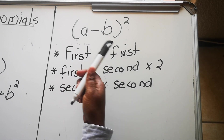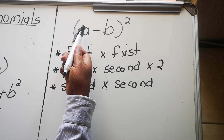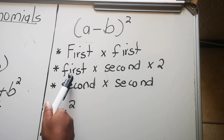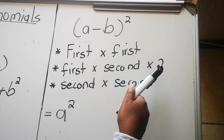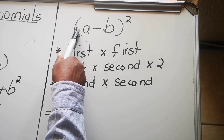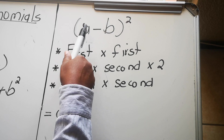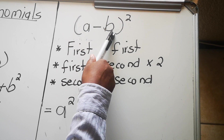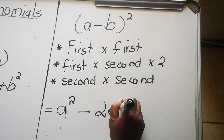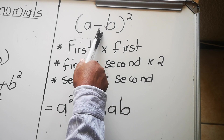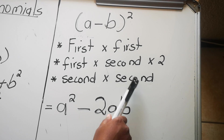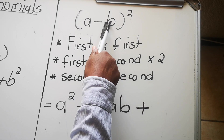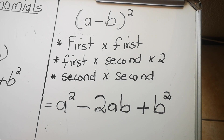With this shortcut method, you multiply the first term by the first term — so a times a gives a squared. Then you multiply the first term by the second term and multiply by 2. The first term is positive and the second term is negative, so positive times negative is negative, giving you -2ab. Then the last term: the second term multiplied by the second term — negative times negative is positive, b times b gives b squared.